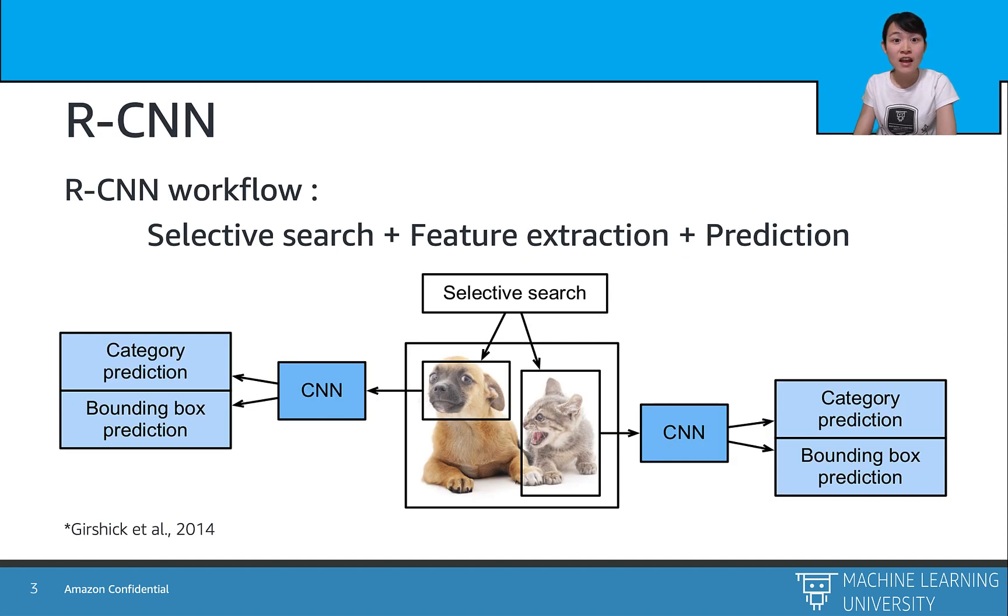So R-CNN is an innovative paper from UC Berkeley back in 2014. And here is the full skeleton of the R-CNN. It contains three main components: the selective search, the feature extraction, and prediction.